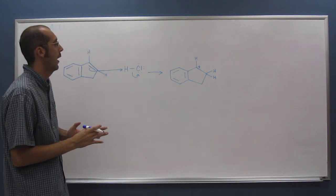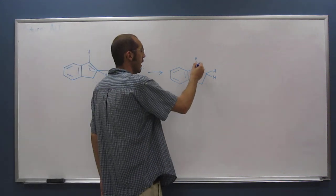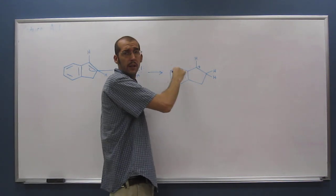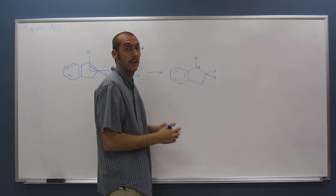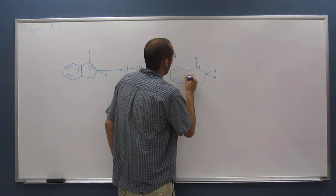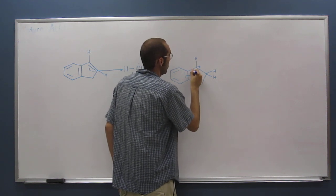But remember, we talked about when you've got this positive charge, alpha to the benzene ring, what will happen is, you've got a bunch of resonance structures, right? So let's draw one of those resonance structures.